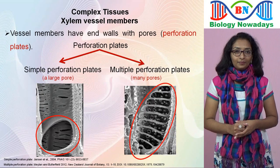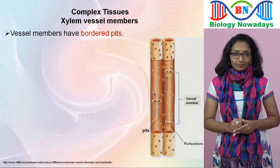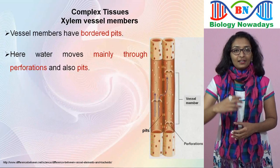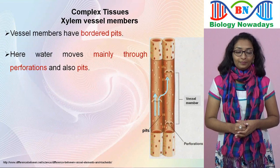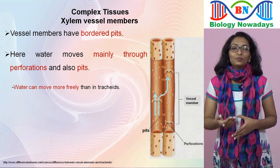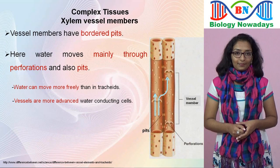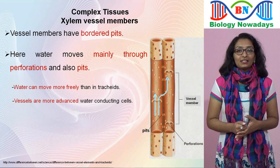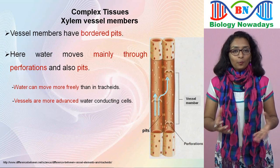Vessels also have pits like we saw in tracheids. In vessels, water moves from one vessel member to the next mainly through perforations in the end walls and also through pits. This means that in vessels, water can move more freely than in tracheids, so vessels are more advanced water conducting cells than tracheids. In eucalyptus trees, xylem vessels formed by several vessel members are sometimes as long as three to six meters. Being thick-walled, vessels also give mechanical support.